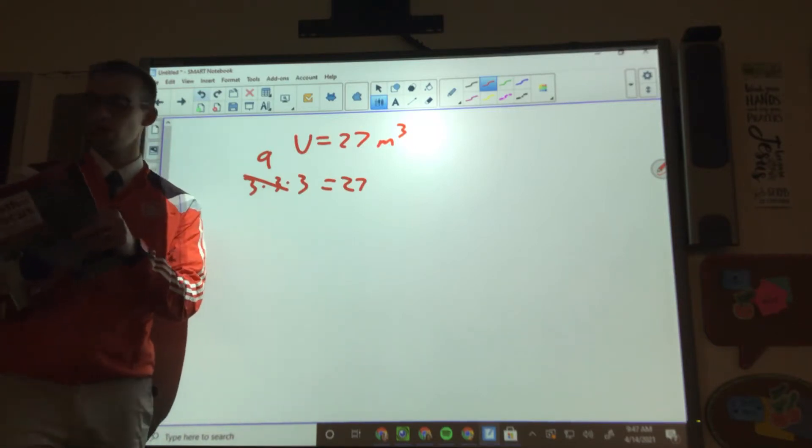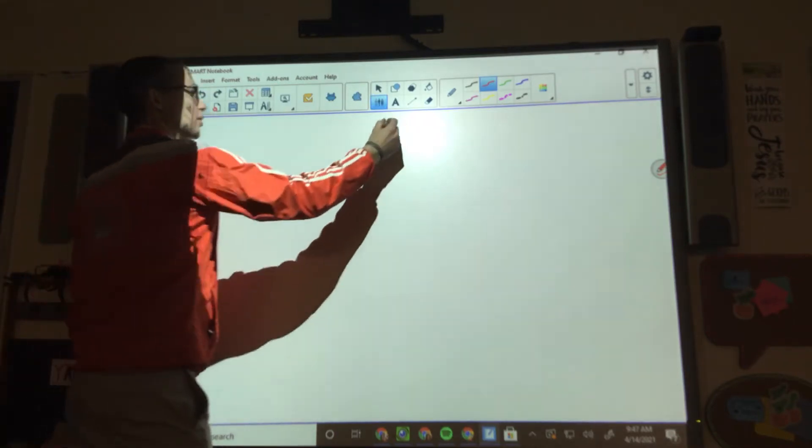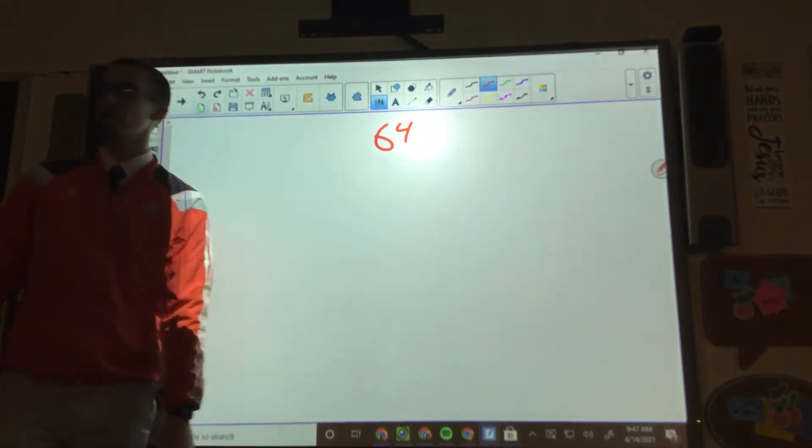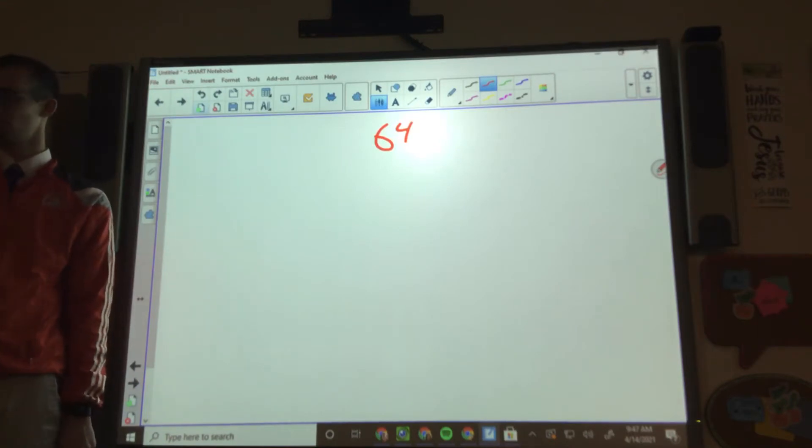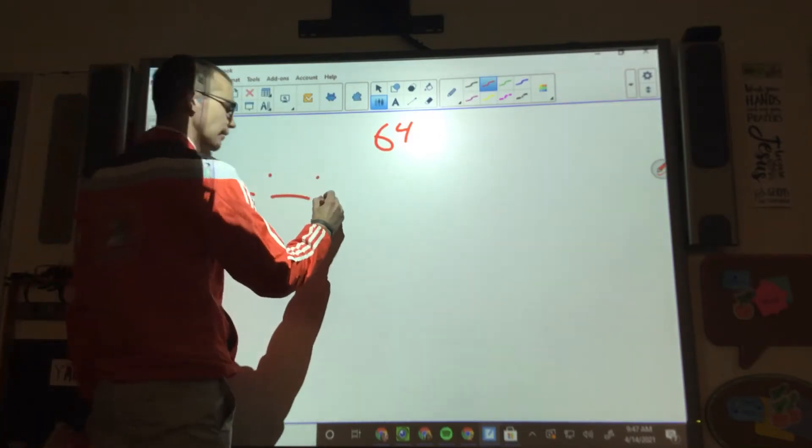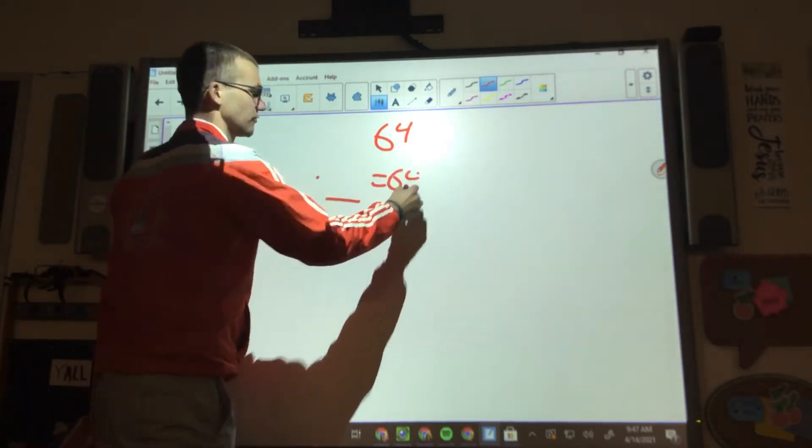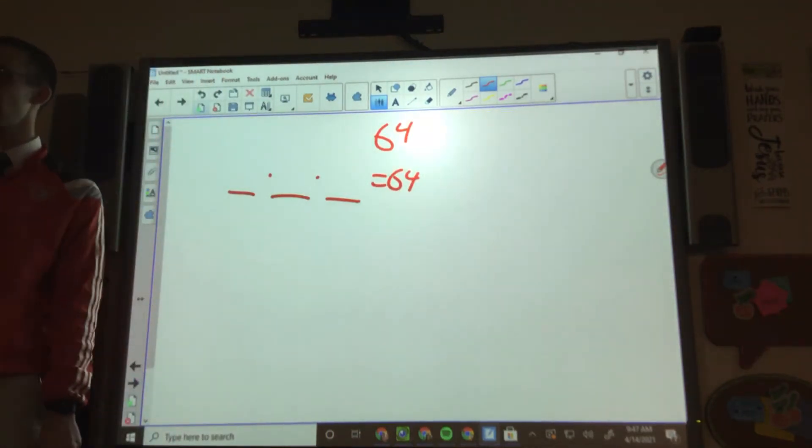But if I give you 64, how many of you know what number times itself, times itself is 64 right away? Eight times eight. Nope. Eight times eight is 64. We are trying to figure out what number times what number times what number is 64. So no, it is not eight. That right there is the number one reason why you should not just be guessing and checking or assume that you know it like that.